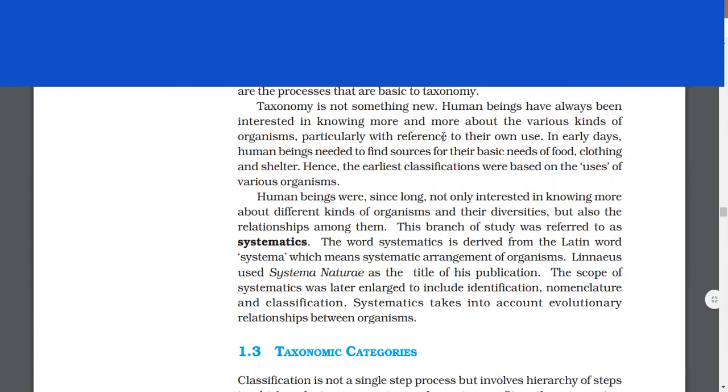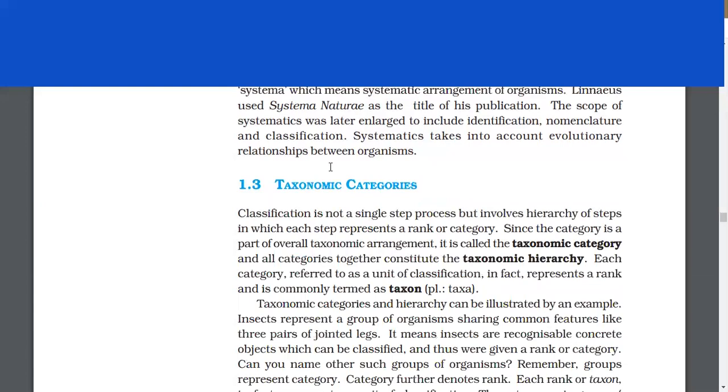Human beings were, since long, not only interested in knowing more about different kinds of organisms and their diversities, but also the relationships among them. This branch of study was referred to as systematics. The word systematics is derived from the Latin word systema, which means systematic arrangement of organisms. Linnaeus used Systema Naturae as the title of his publication. Systematics takes into account evolutionary relationships between organisms.